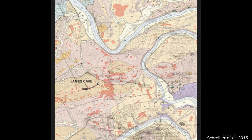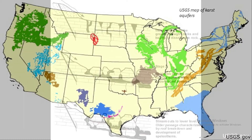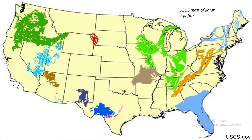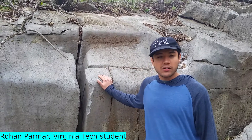Thick clay and silt sediments are common in sinkholes and have a capacity to store and release large amounts of water over time, acting as slow or rapid sources of recharge for aquifers. Here we have a limestone outcrop.